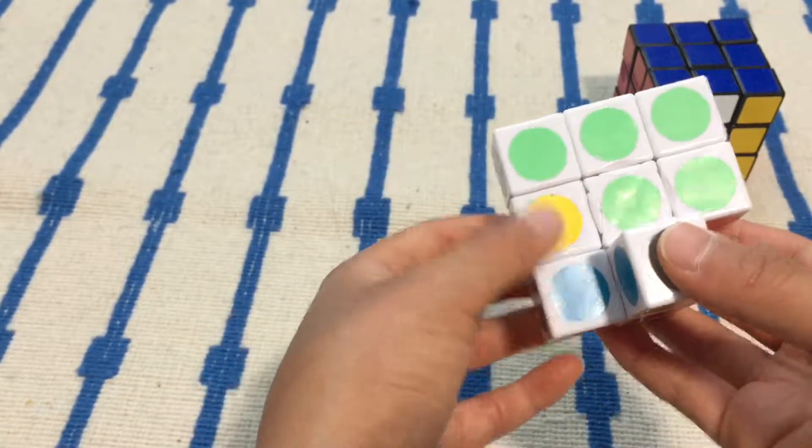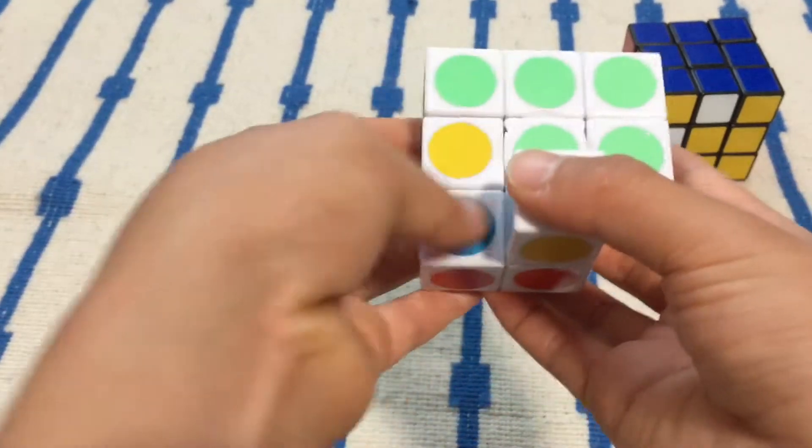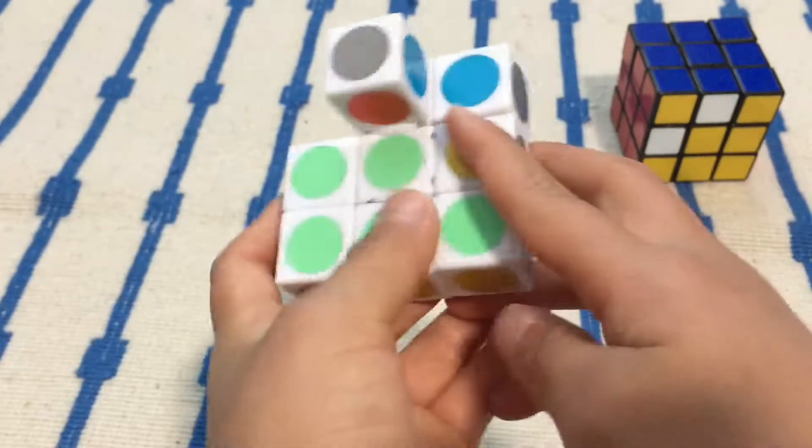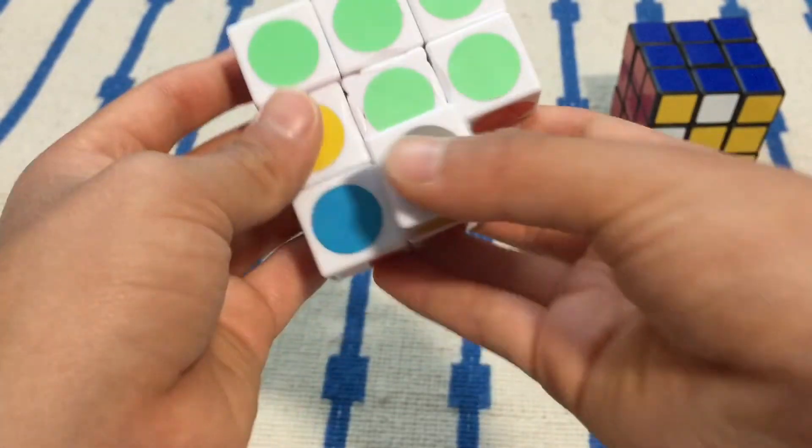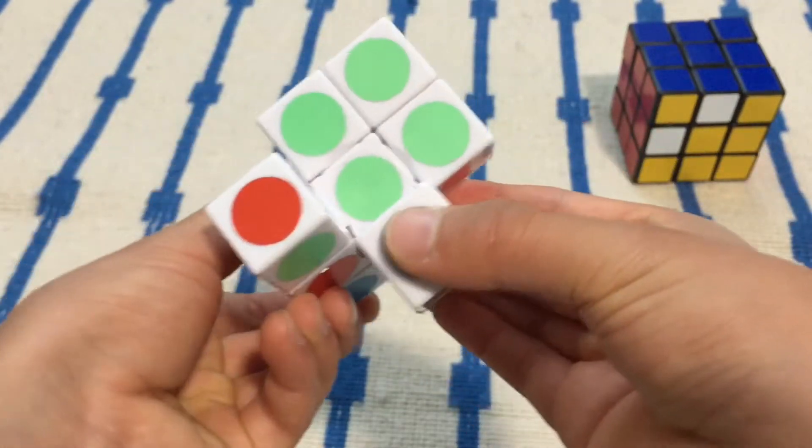So this is going to be hard - not hard, but you need to try and find a three by one by one row here and then move that up.